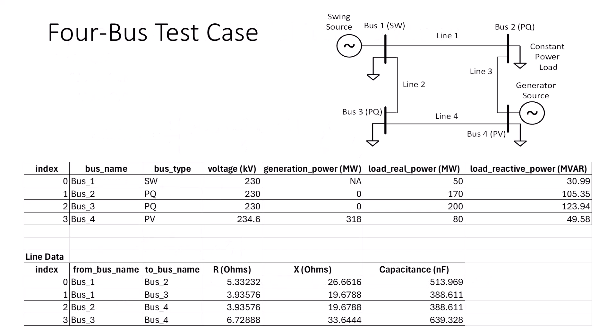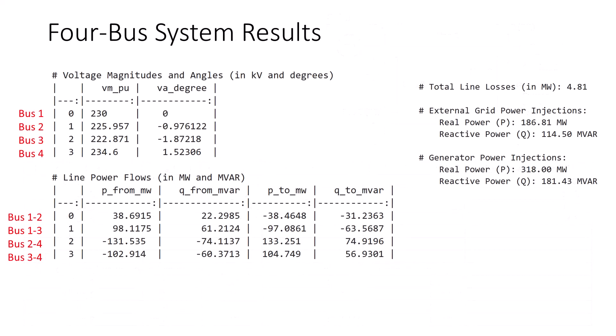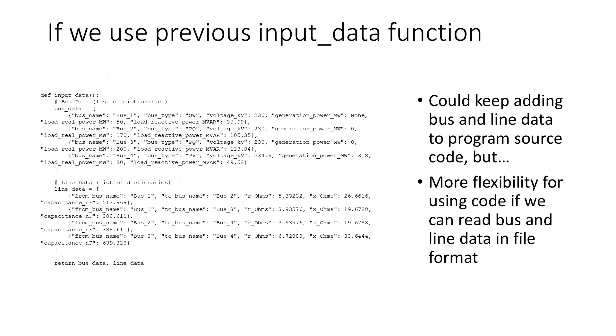We will test our program code using this four-bus test case. This is from Chapter 9 of the textbook Power System Analysis by Granger and Stevenson. Bus type SW denotes a swing bus, which is an ideal voltage source. PQ denotes a load bus, and PV denotes a generation bus. The bus voltage KV field provides a swing bus voltage, as well as the generator PV bus voltage magnitude set point. Here is a solution for this four-bus system test case. These results were obtained using a pre-existing Power Flow program.